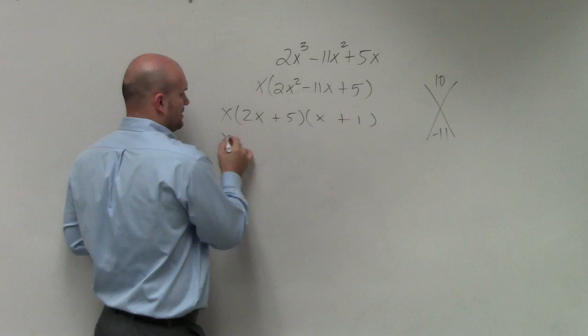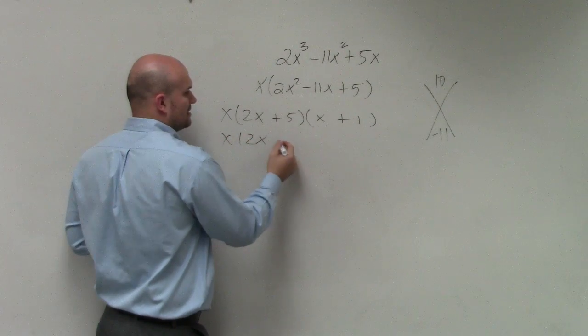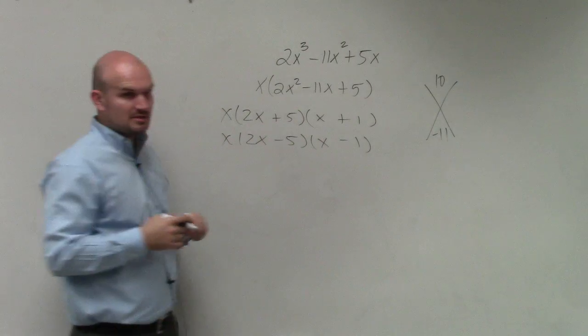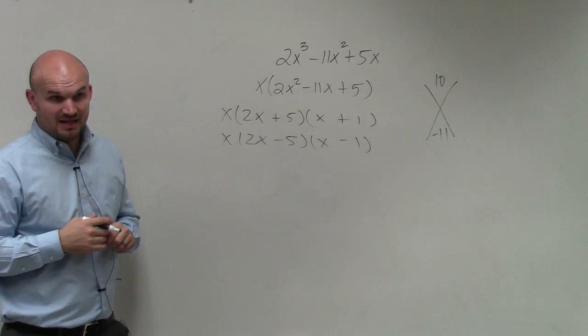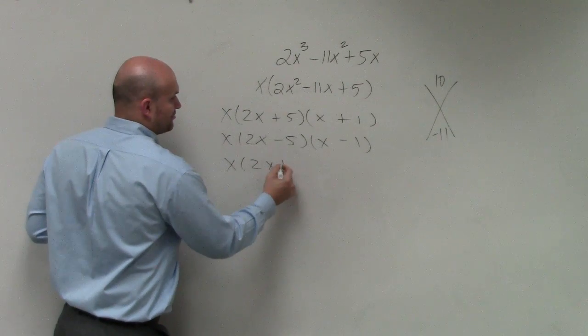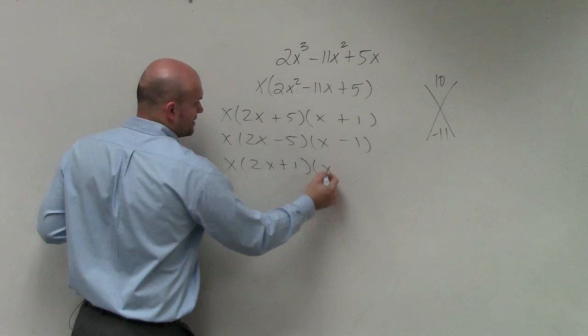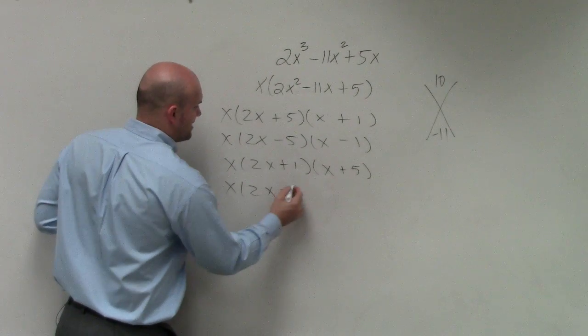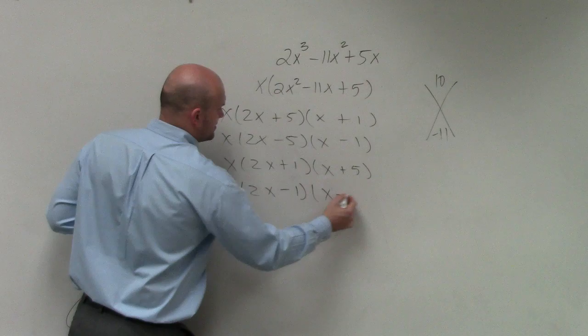Or it could also be x times 2x minus 5 and x minus 1. That works, correct? Or you could also do 2x plus 1 times x plus 5, or 2x minus 1 times x minus 5.